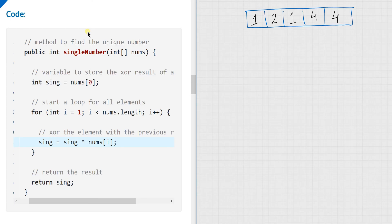Let us try to do a dry run of this code side by side with an example. So let us say I have this example array. And we can see the code on the right.